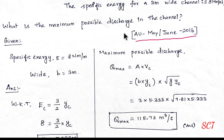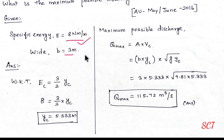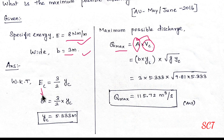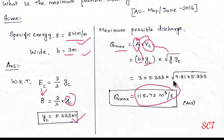May–June 2016 question: specific energy for a 3 m wide channel is 8 m. What is the maximum possible discharge in the channel? Using Ec equals 3/2 × Yc, substituting Ec equals 8 m gives Yc equals 5.33 m. Maximum discharge equals area into critical velocity: Q equals B × Yc × square root of g × Yc, giving maximum discharge of 115.72 m³ per second.